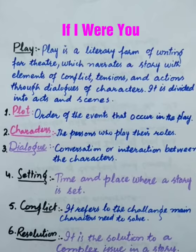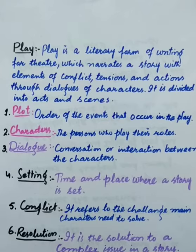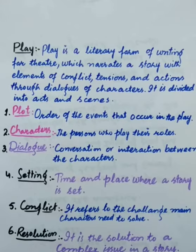Now let's highlight the elements of a play. The first element is plot. Plot means the order of events that occur in the play. The second element is characters — the persons who play their roles in a play. The third element is dialogue, which means the conversation or interaction between the characters.